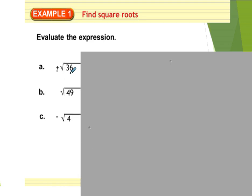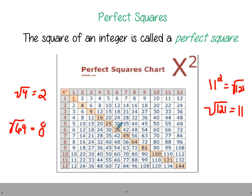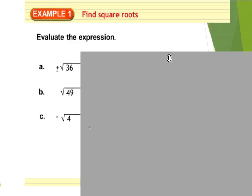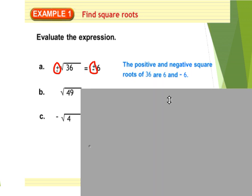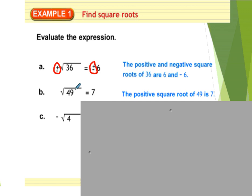First example: the square root of 36. It's a perfect square, so the square root of 36 is 6. The plus-or-minus symbol means positive or negative — the positive square root of 36 is positive 6, but it could also be negative 6, because negative 6 times negative 6 also equals positive 36. Next, the square root of 49: 7 times 7 equals 49.